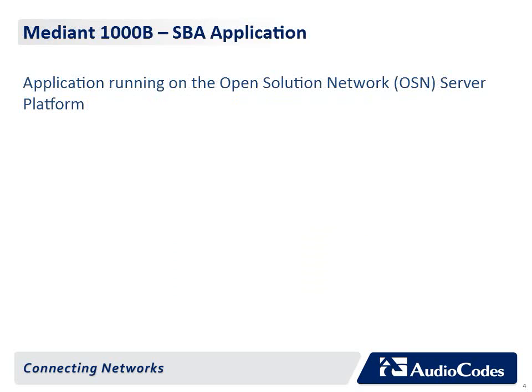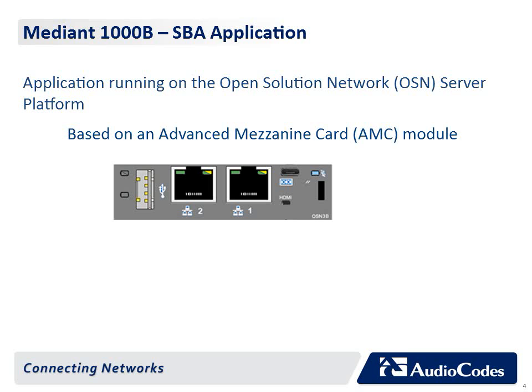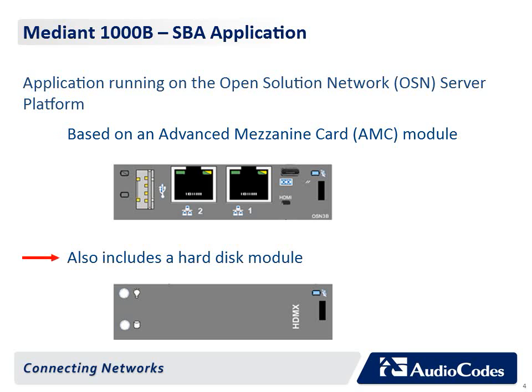The Mediant 1000B includes an open solution network OSN server platform running the Survivable Branch Appliance SBA application. The OSN server is based on single and mid-sized advanced mezzanine card AMC modules. These are housed in the chassis AMC slots on the rear panel of the Mediant 1000 and also includes a hard disk to provide a complete solution within the device's chassis.